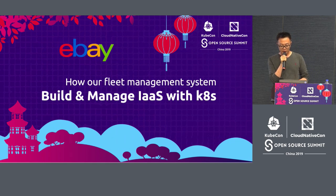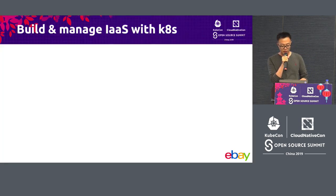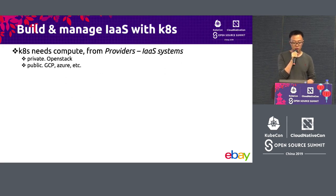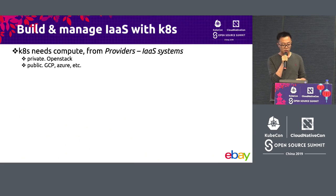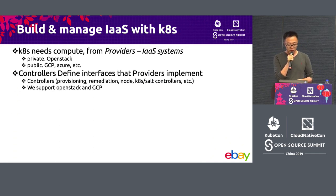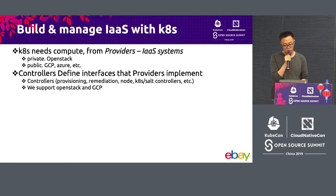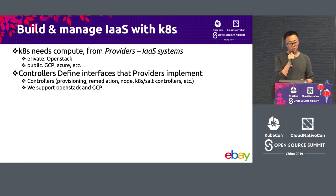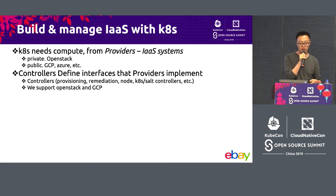Next, let's zoom into the IaaS layer to see how we build and manage it. Kubernetes needs compute from providers. We have different providers — for example, OpenStack as a private cloud provider and GCP as a public cloud provider. Our fleet management system needs to define interfaces from our controllers to work with those providers. A typical example is a provisioning controller that would define the interfaces to create, delete, and re-image computes. Different providers' clients will implement those interfaces.